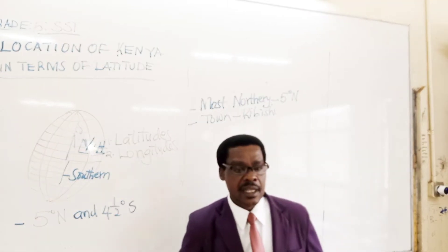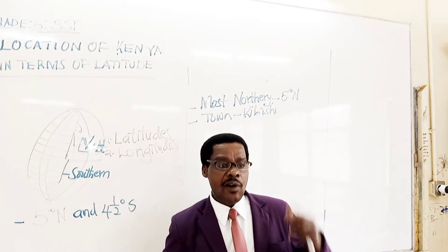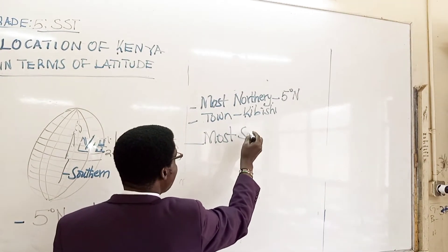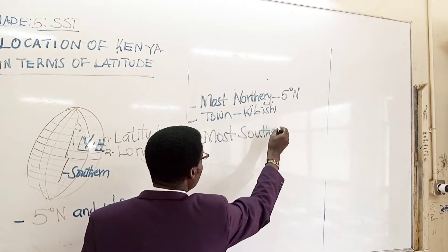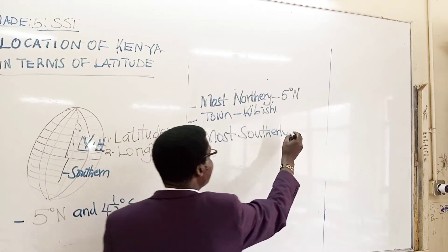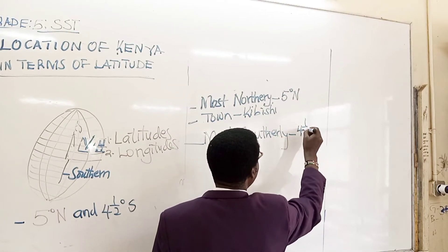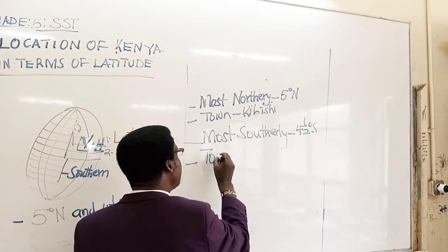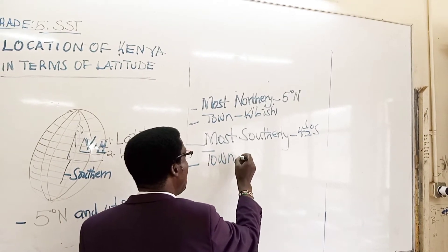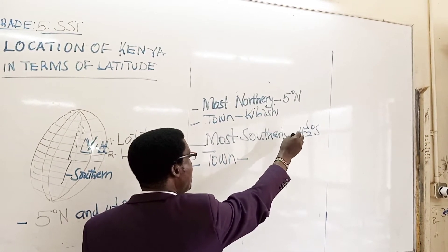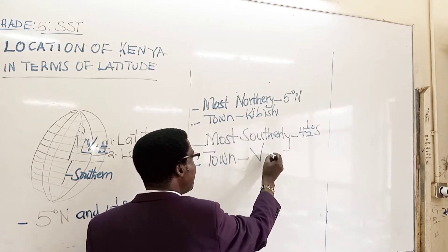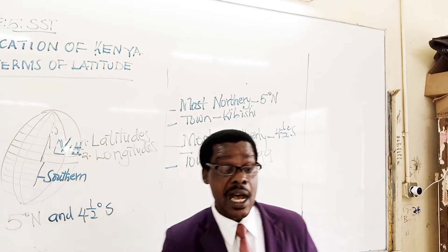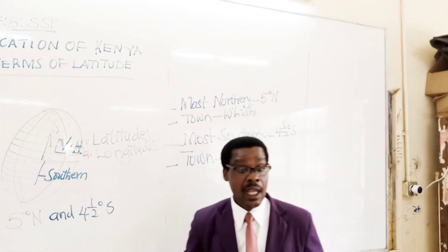The most southern point of Kenya is at four and a half degrees south. The town at this point — four and a half degrees south — is none other than Vanka, which is at the border of Kenya and Tanzania.